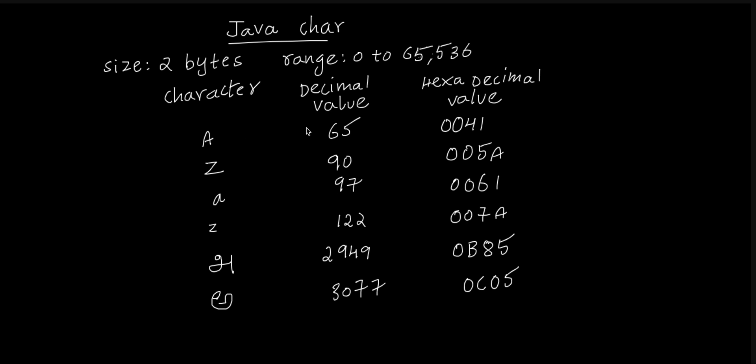For capital A, the decimal value is 65 and hexadecimal value is 0041. For capital Z, the decimal value is 90 and hexadecimal value is 005A. For Tamil அ, the decimal value is 2949 and hexadecimal value is 0B85. For Telugu అ, the decimal value is 3072 and hexadecimal value is 0C00.